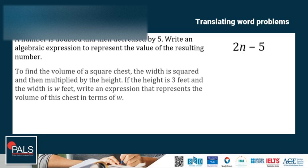Another example. To find the volume of a square chest, the width is squared and then multiplied by the height. If the height is 3 feet and the width is W feet, write an expression that represents the volume of this chest in terms of W. The width is squared, so you can represent it by W squared. Multiplying this by 3 gives you the final expression of 3W squared.